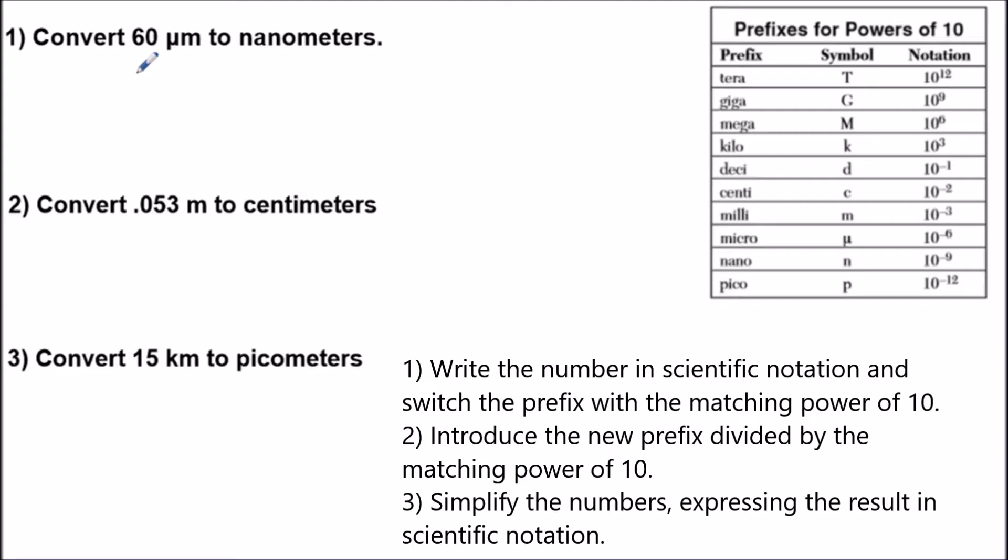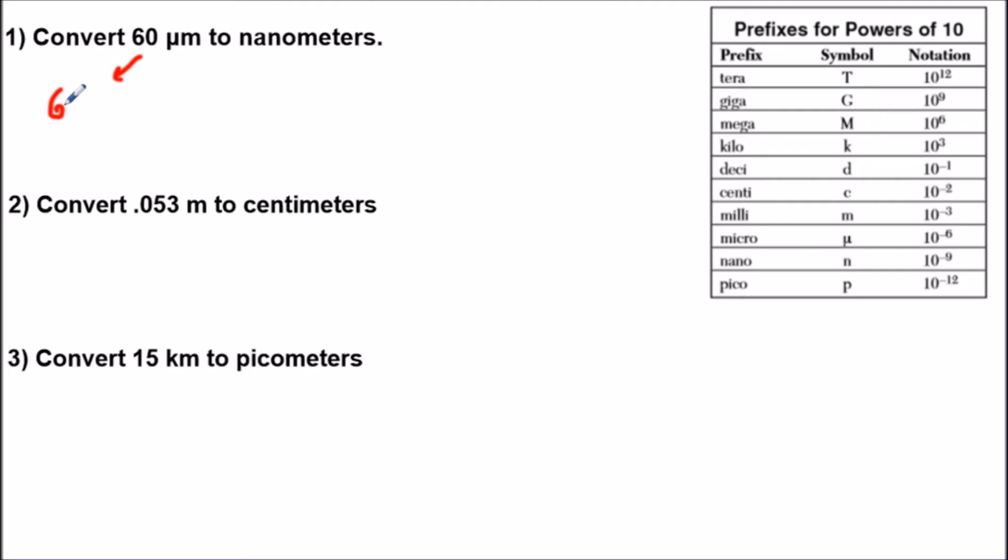So what we want to do first is we're going to rewrite 60 in scientific notation. This is 6 times 10 to the first power. Next we're going to replace this prefix micro, the symbol mu. We're going to write the appropriate power of 10. And mu corresponds to 10 to the negative 6 power. So we're just going to replace mu with 10 to the negative 6.